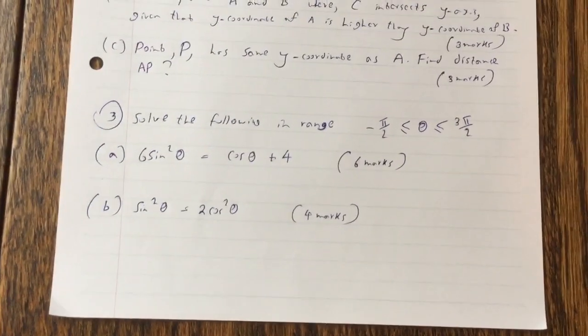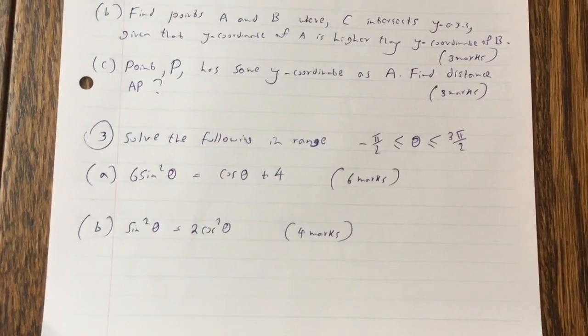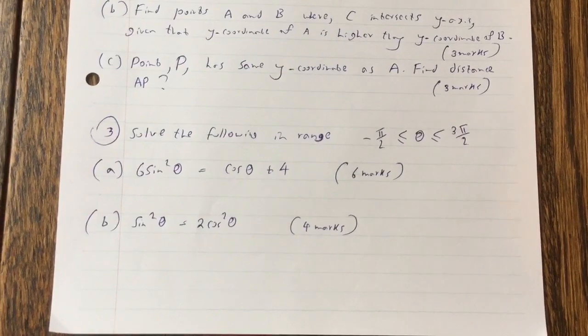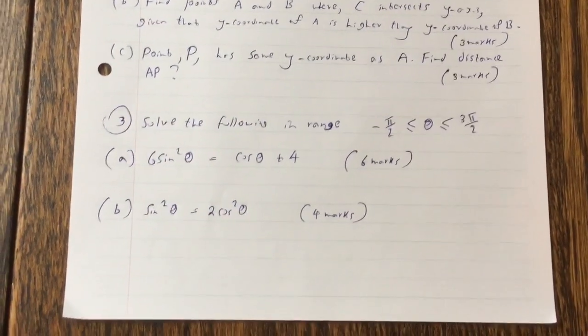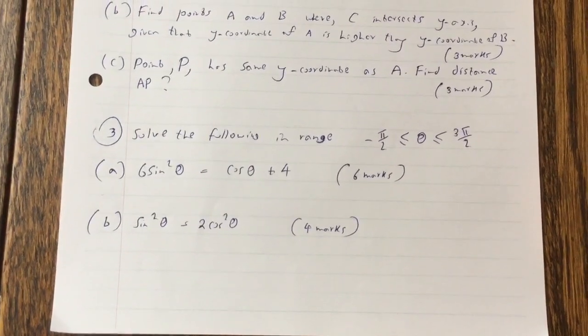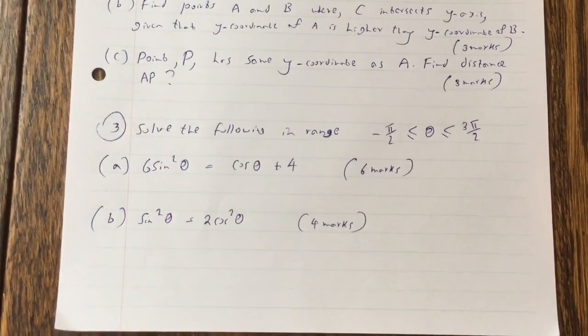Question 3. Solve the following in range minus pi over 2 to 3 pi over 2 for theta. Question A: 6 sine squared theta equals cos theta plus 4. Question B: Sine squared theta equals 2 cos squared theta.